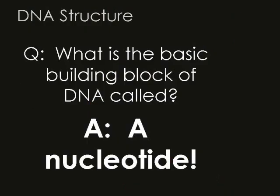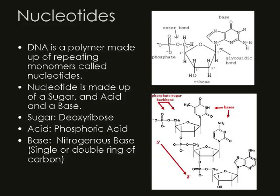Now we're going to look at the basic building block of DNA, called a nucleotide. DNA is a polymer made up of repeating monomers called nucleotides. A nucleotide is made up of a sugar, an acid, and a base. The sugar is deoxyribose, the acid is phosphoric acid, and the base is one of four types found in DNA. The nitrogen bases come in two varieties: single rings and double rings.